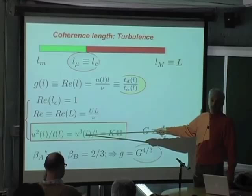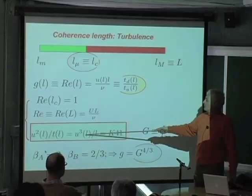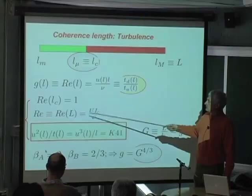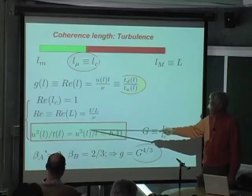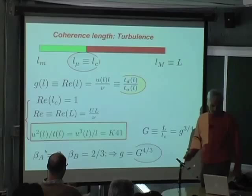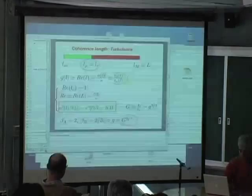That's why I need this relation. In the case of turbulence, since the velocity itself is changing with the scale, you need a further relation which, as I told you, is drawn by theory. And without that further relation, there is no way you can pin down the coherence length. This is just a clarification from the previous lecture.